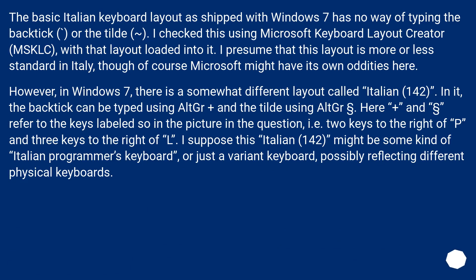The basic Italian keyboard layout as shipped with Windows 7 has no way of typing the backtick or the tilde. I checked this using Microsoft Keyboard Layout Creator, MSKLC, with that layout loaded into it. I presume that this layout is more or less standard in Italy, though Microsoft might have its own oddities. However, in Windows 7 there is a somewhat different layout called Italian 142. In it, the backtick can be typed using AltGr plus the plus key, and the tilde using AltGr plus the section key, referring to two keys to the right of P and three keys to the right of L. This Italian 142 might be some kind of Italian programmer's keyboard or just a variant, possibly reflecting different physical keyboards.